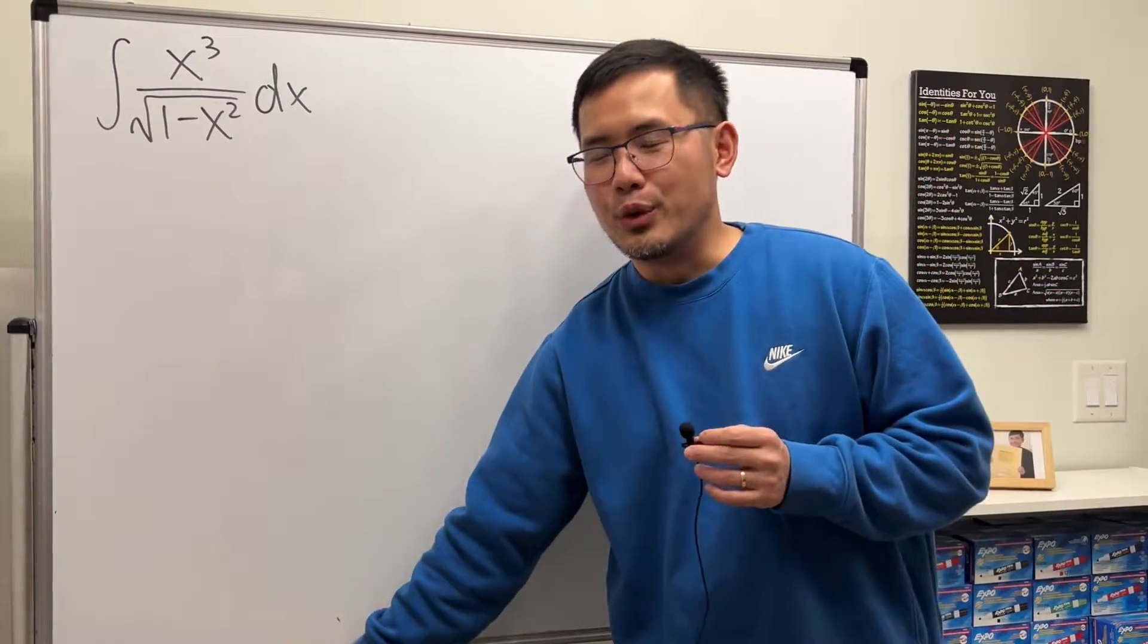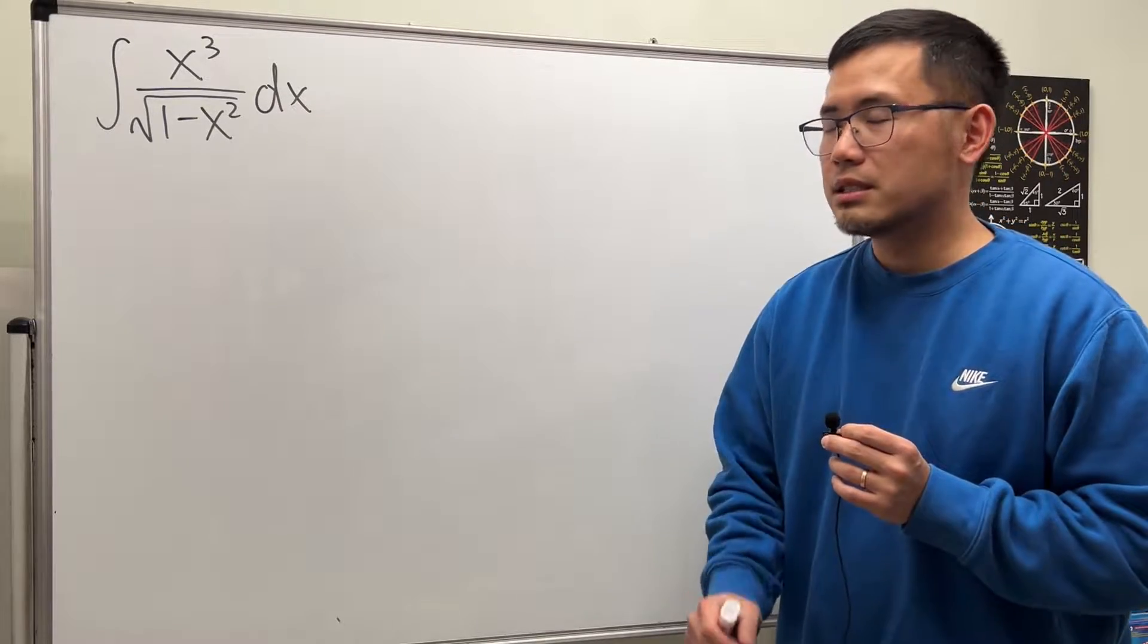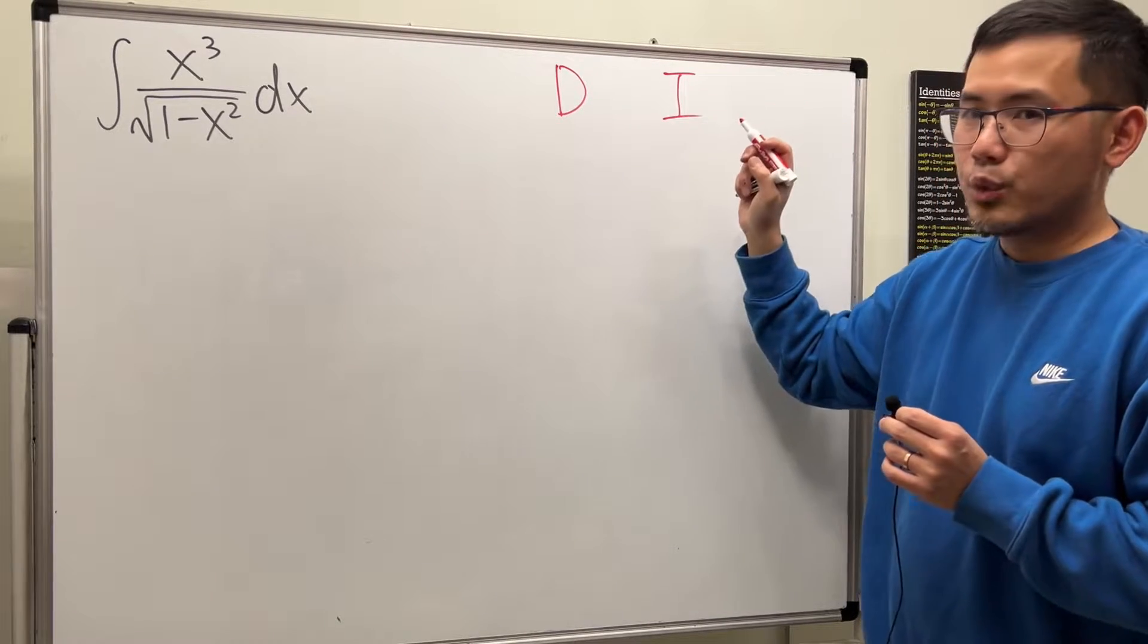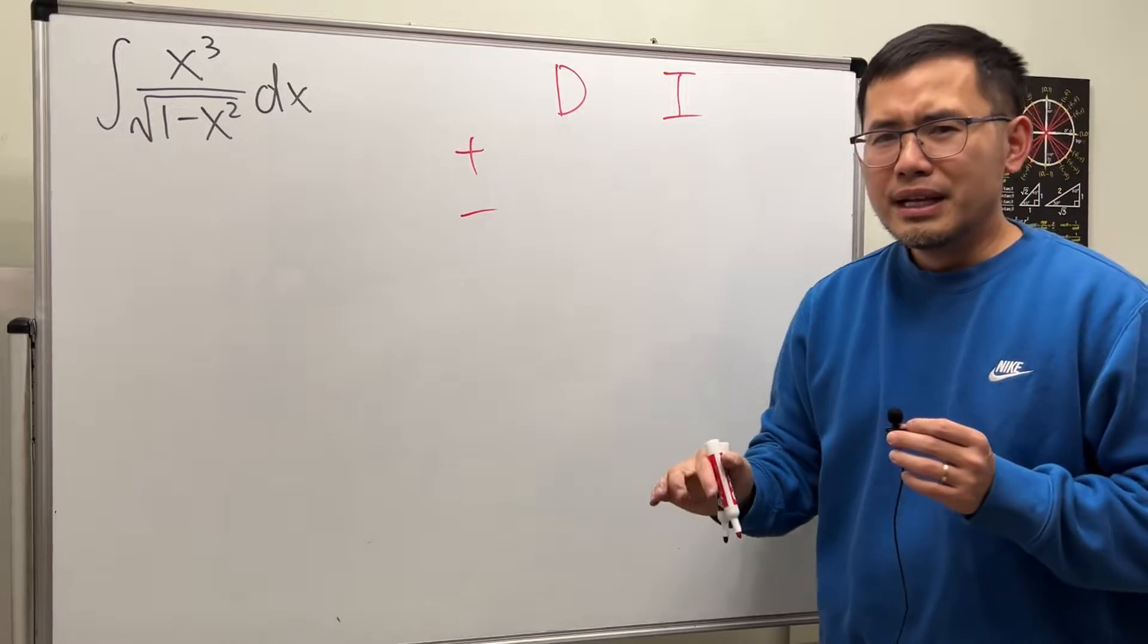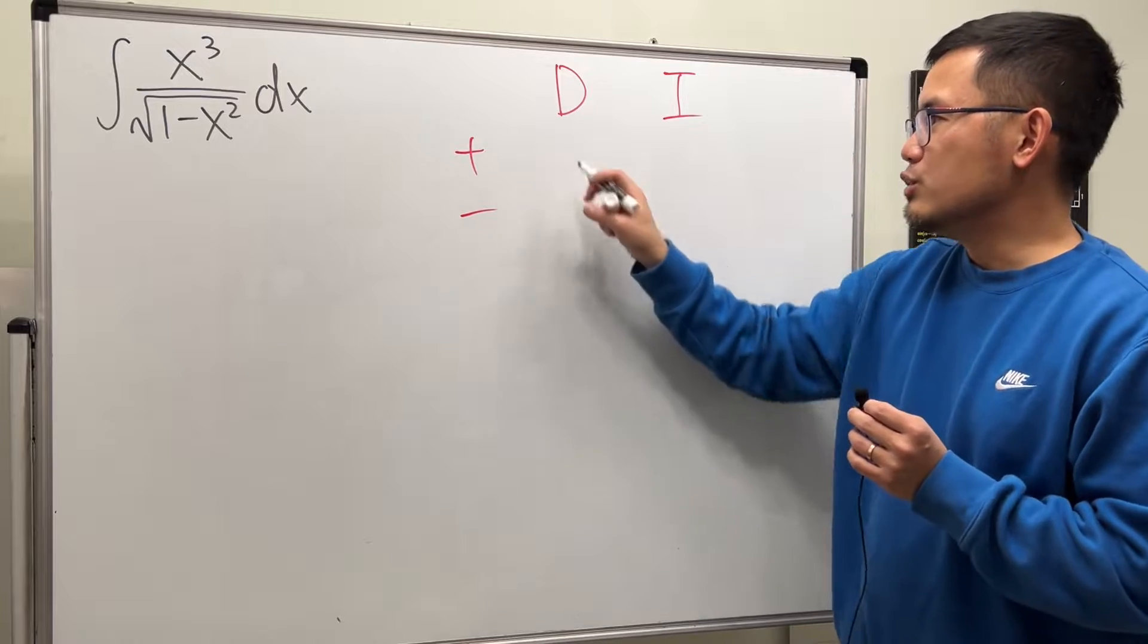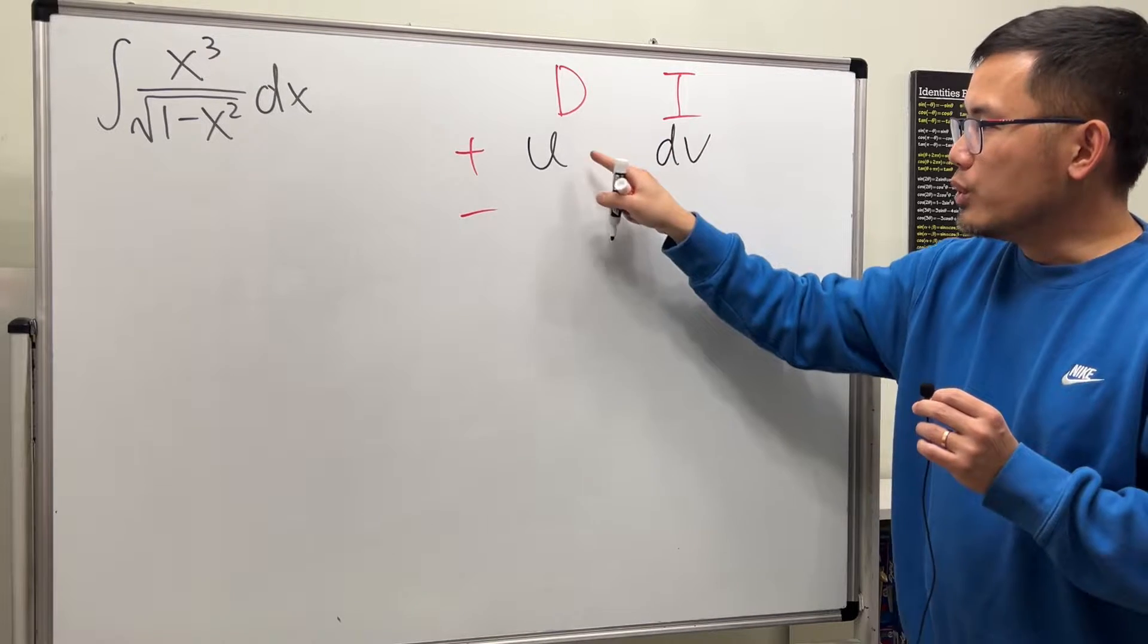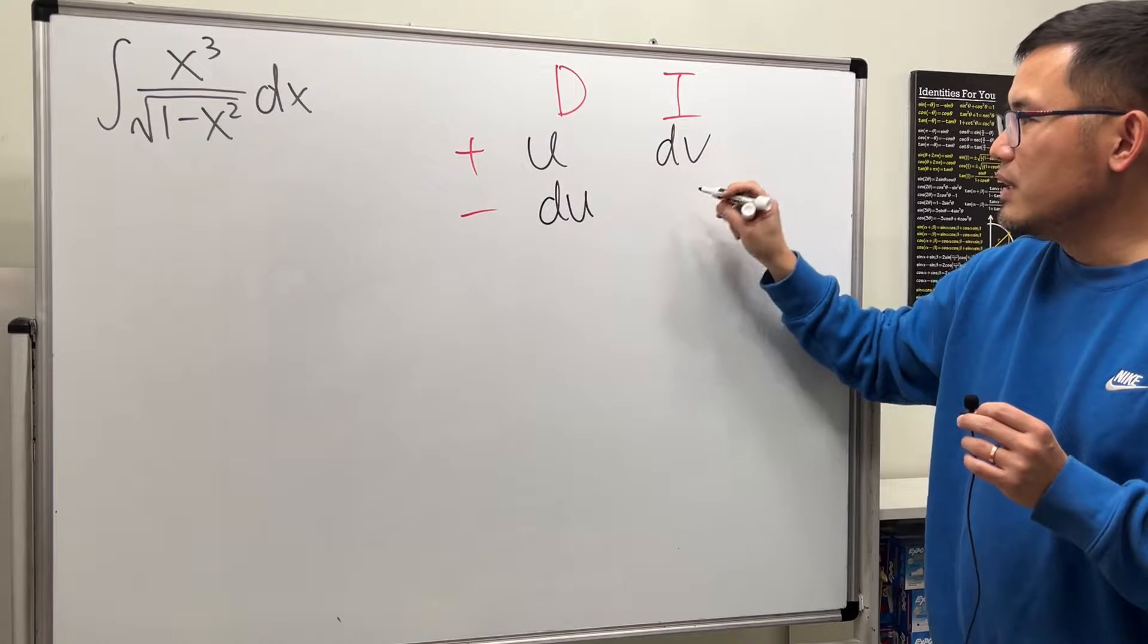Usually when you see the integral of x to the third power over square root of 1 minus x squared, you use trig sub. You can say that x equals sine theta, but that's not what we are doing here today. Integration by parts is the request. Remember the idea of using integration by parts. We look at this integral, and we want to pick one part to be differentiated and the other part to be integrated. When you differentiate the U, you get dU. When you integrate the V, you get V.